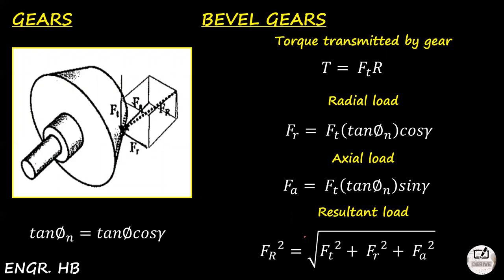In Part 1 for helical gears, we drew a cube — a rectangular parallelepiped — and involved four loads: radial, tangential, axial, and the resultant load. Similarly for bevel gears, we again have four loads. The resultant load is the square root of the sum of the squares of the forces. The normal pressure angle is also involved: tangent(normal pressure angle) = tangent(pressure angle) × cosine(cone angle).